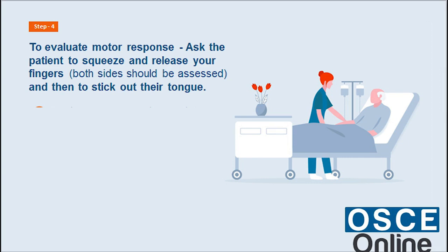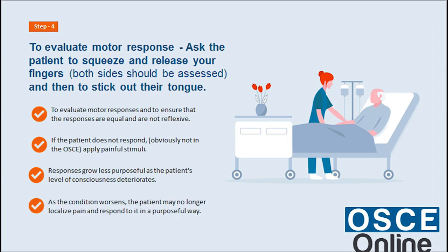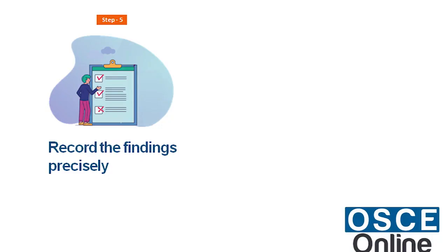To evaluate motor response, ask the patient to squeeze and release your fingers — both sides should be assessed — and then to stick out their tongue, to ensure that responses are equal and not reflexive. If the patient does not respond, apply painful stimuli. Responses grow less purposeful as the patient's level of consciousness deteriorates; the patient may no longer localize pain and respond to it in a purposeful way.